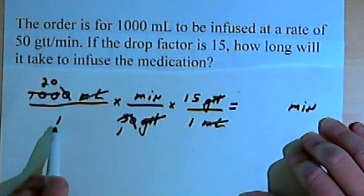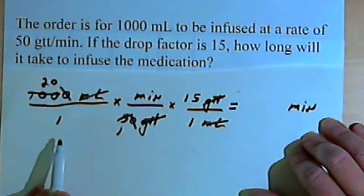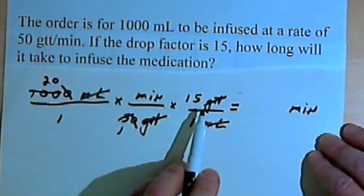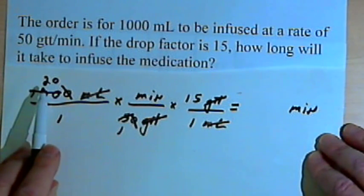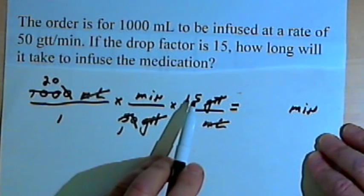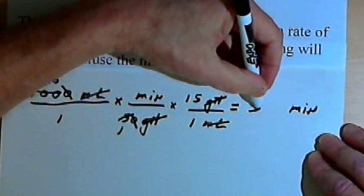Once again, I've got only ones in the denominator, so let's multiply across the numerators and see what we end up with. So I've got 20 times minutes times 15. 20 times 15 is 300, so that's 300 minutes.